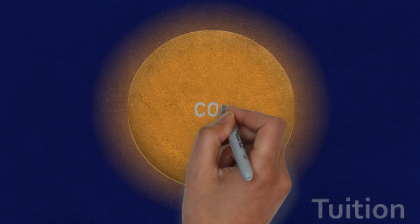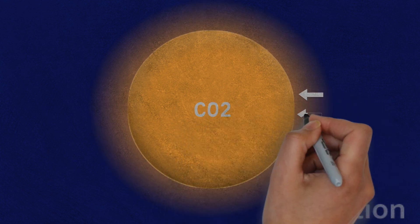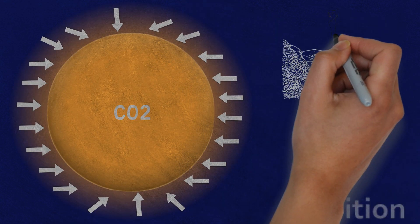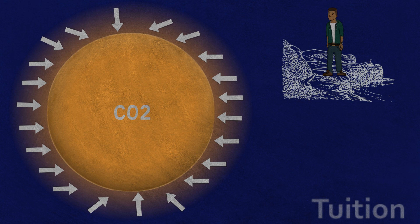Venus has a thick atmosphere of carbon dioxide which adds incredible pressure and traps in the heat. Consider our planet. When we stand at sea level, we experience one atmosphere of pressure.